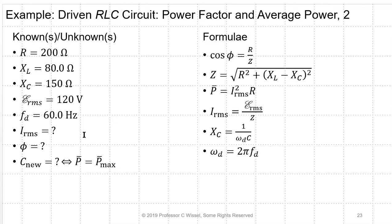The given values are: resistance R = 200 Ω, inductive reactance XL = 80 Ω, capacitive reactance XC = 150 Ω, and V-RMS = 120 V at 60 Hz. The key formulas are: power factor = R/Z, impedance Z = sqrt(R² + (XL − XC)²), power P = I²R, and I-RMS = V-RMS / Z.